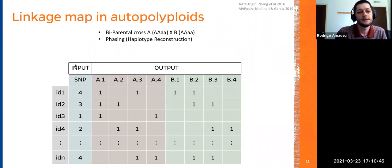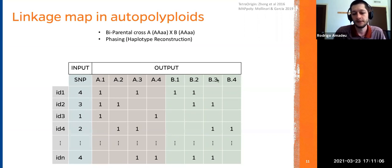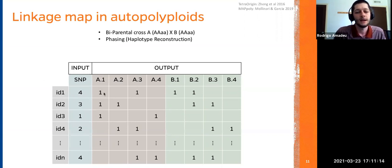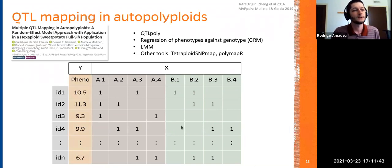For a given SNP across different individuals in an autotetraploid, the dosage can range from zero to four, representing how many alternative alleles that individual carries. As output, you get the presence or absence — or probabilities — of having inherited a given haplotype. For example, an individual might have inherited the first and third haplotypes of parent one and both haplotypes of parent two. With this haplotype reconstruction you can then do QTL mapping.